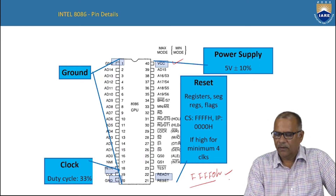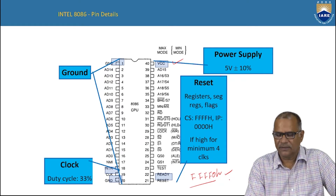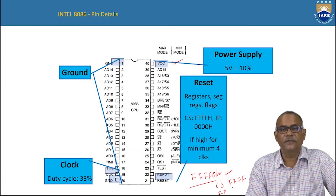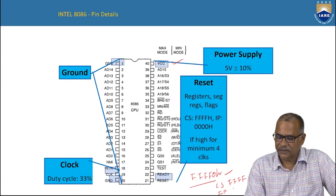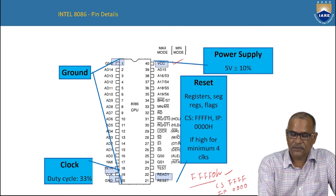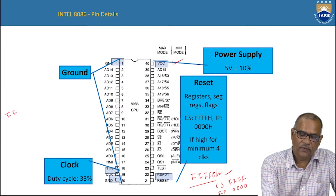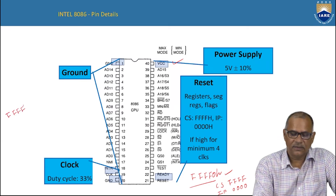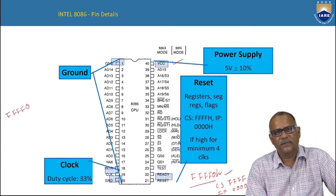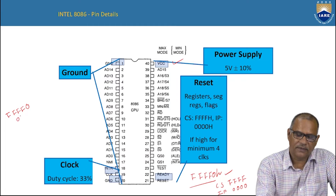When you press reset, the code segment register is initialized with all zeros. The effective address is calculated by shifting the segment base left by one nibble (adding a 0H) and adding the offset from IP. So the effective address becomes FFFF0H, and the processor starts executing instructions from this memory location.